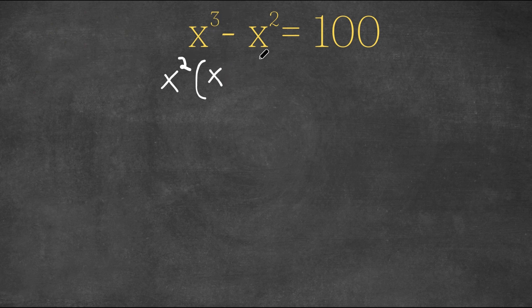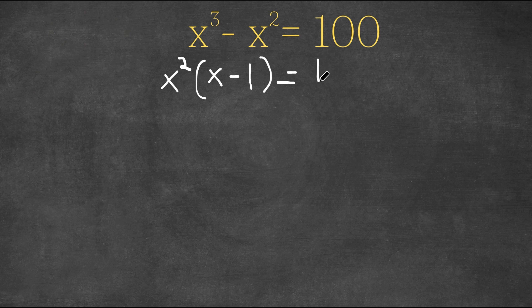Because x to the power of 1 is x minus x squared divided by x squared is simply 1. So we have x squared times x minus 1, and this equals 100 still.